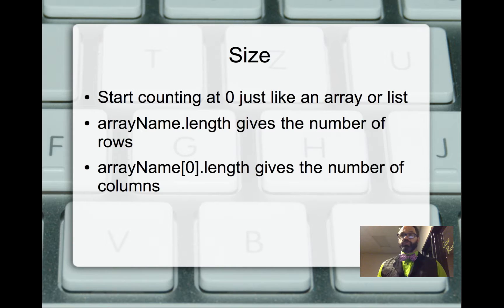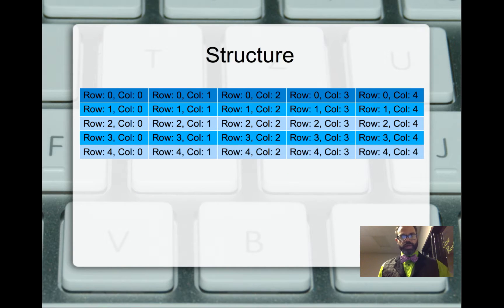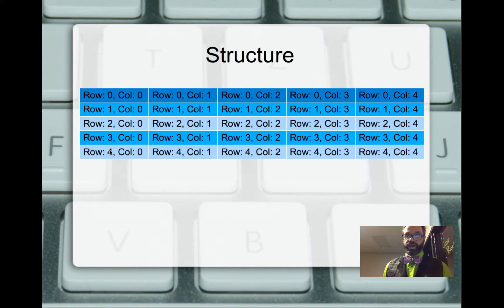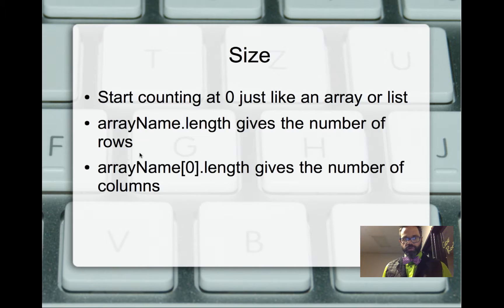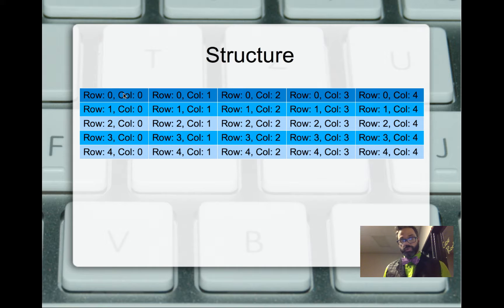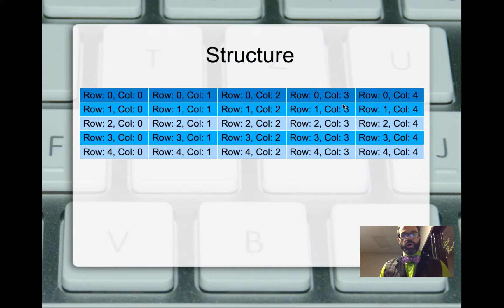The array's dot length gives us the number of rows. Going back to that previous example, dot length would give us 5 because we have rows 0 through 4 — that's length minus 1 for that 4, so the total number of rows is 5. To get the number of columns, we use array name sub 0 dot length. For any rectangular array, we go to row 0 because all rows are going to have the same number of columns, regardless of whether that number is small or large.